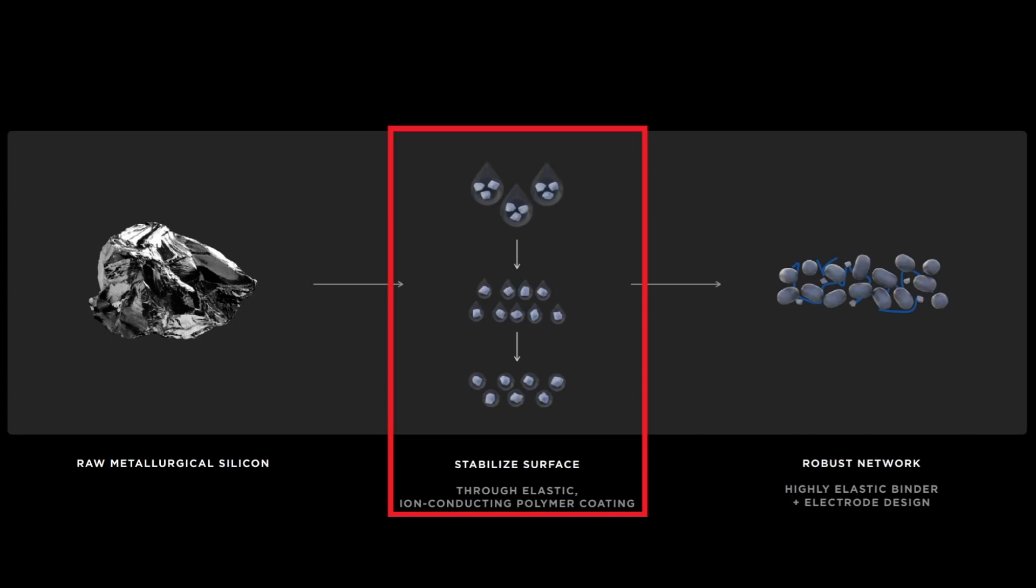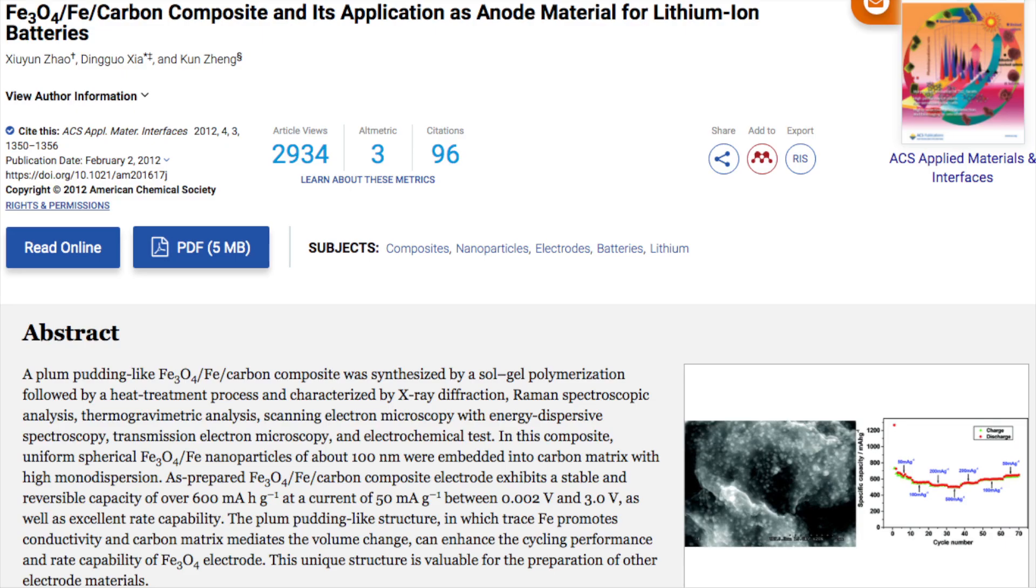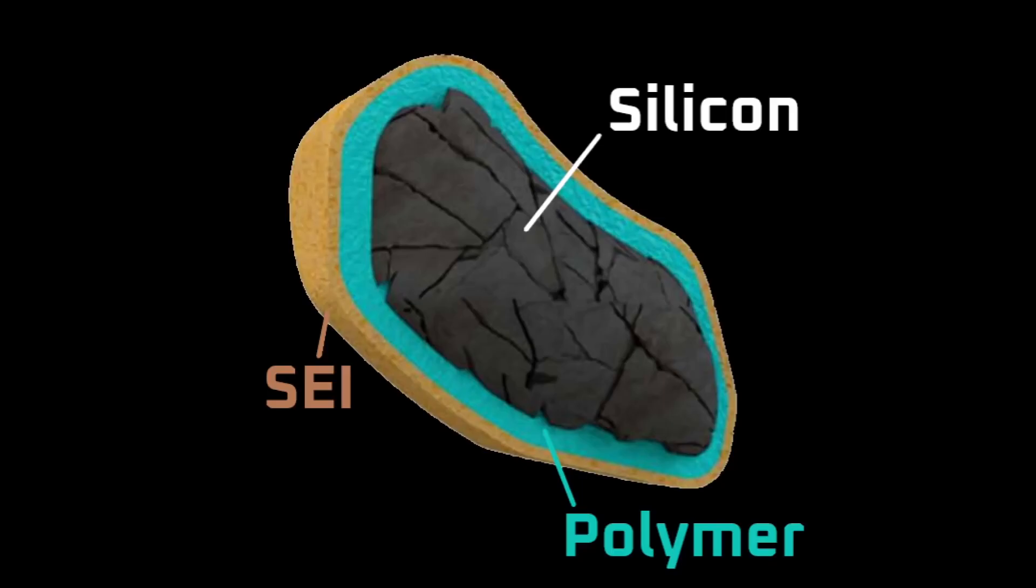One issue with using unrefined silicon is that metal impurities can negatively affect performance. However, some impurities such as iron, for example, can actually store energy on the anode side.